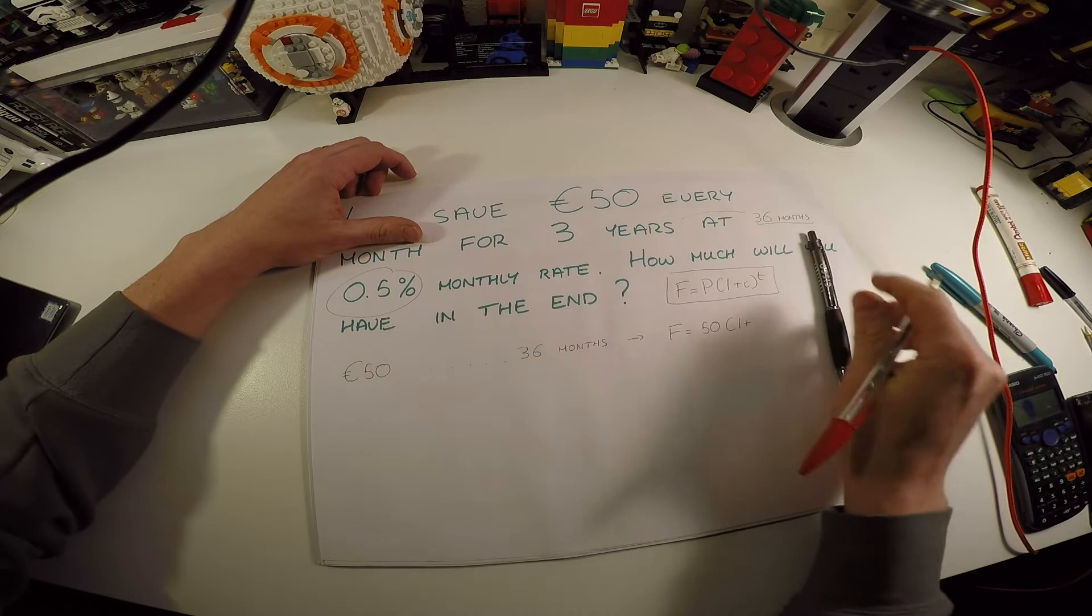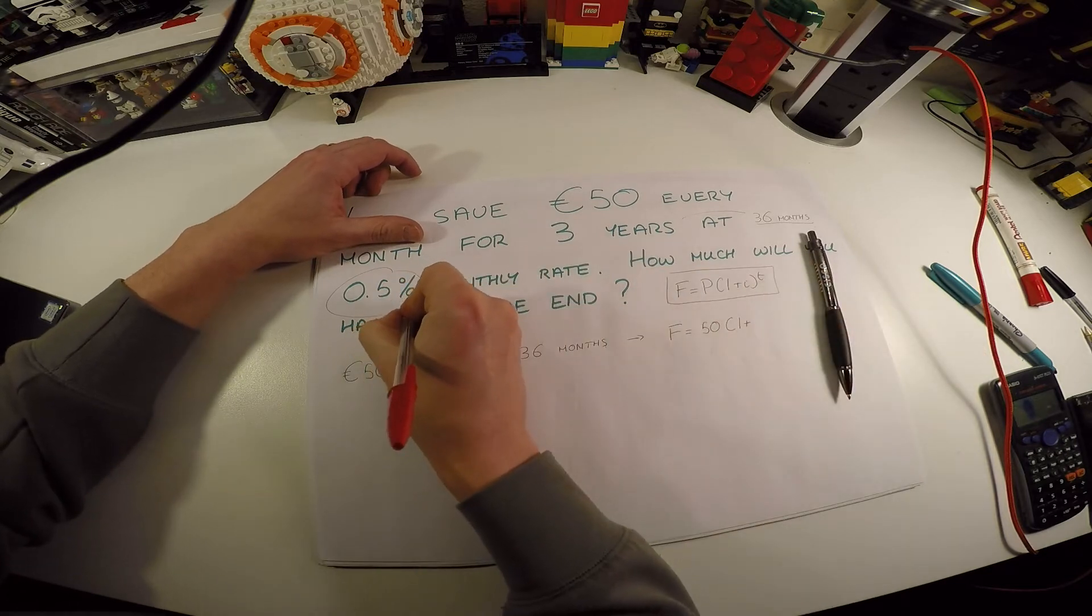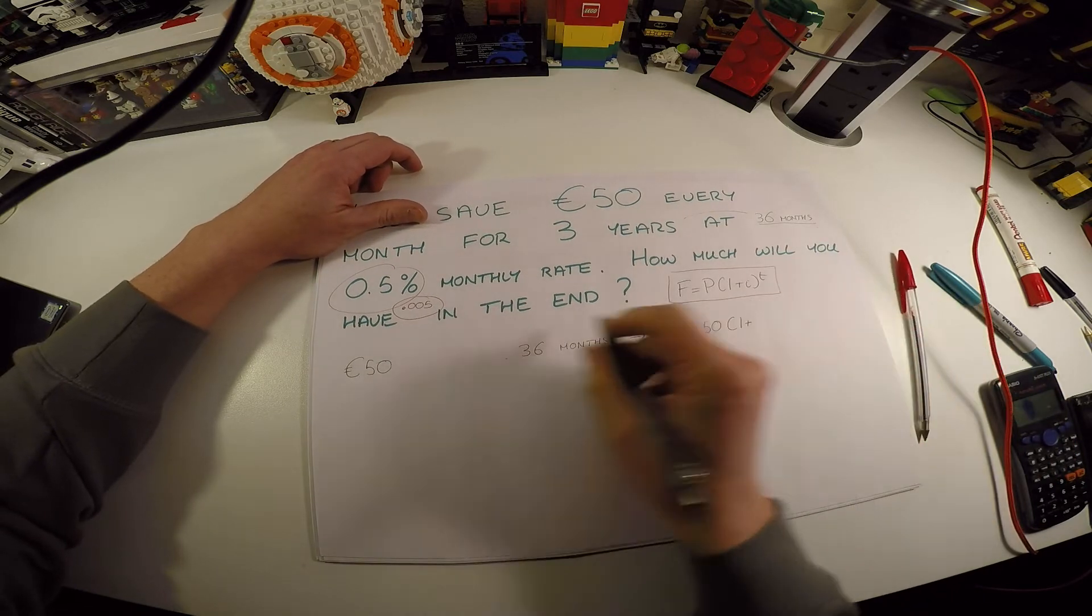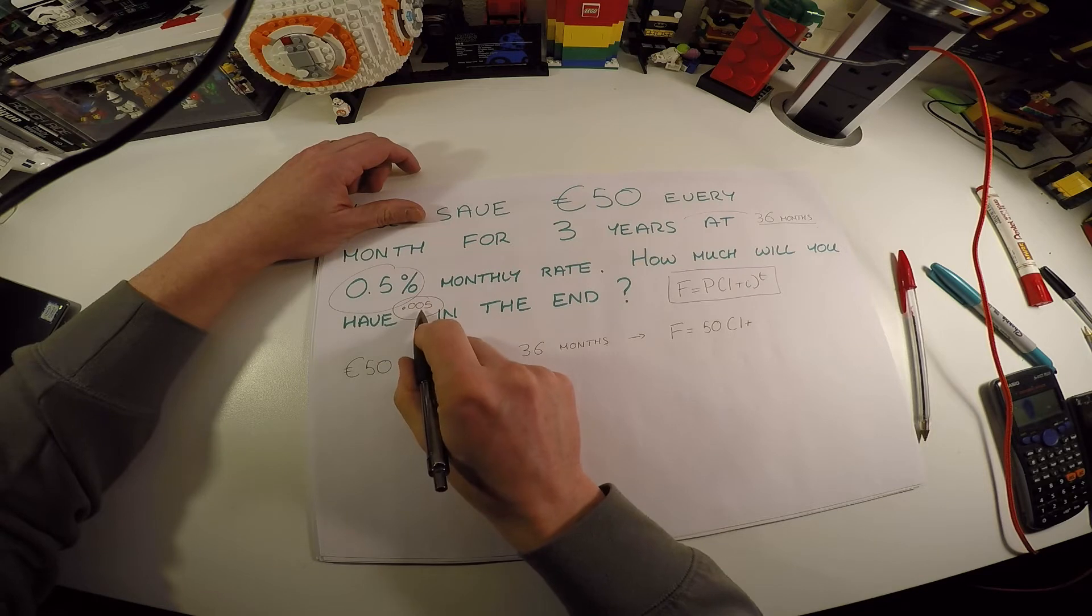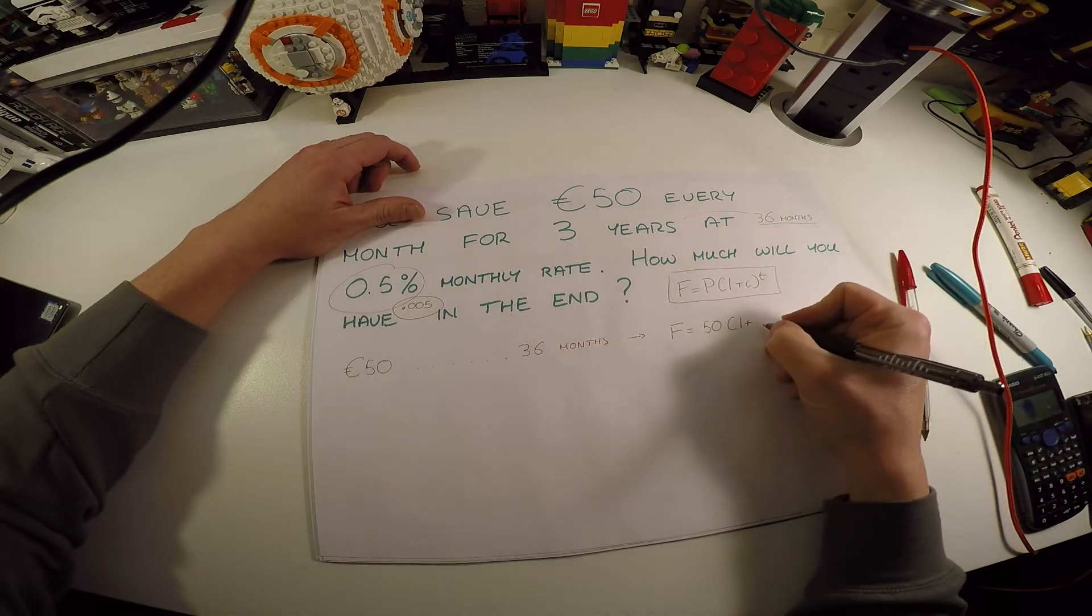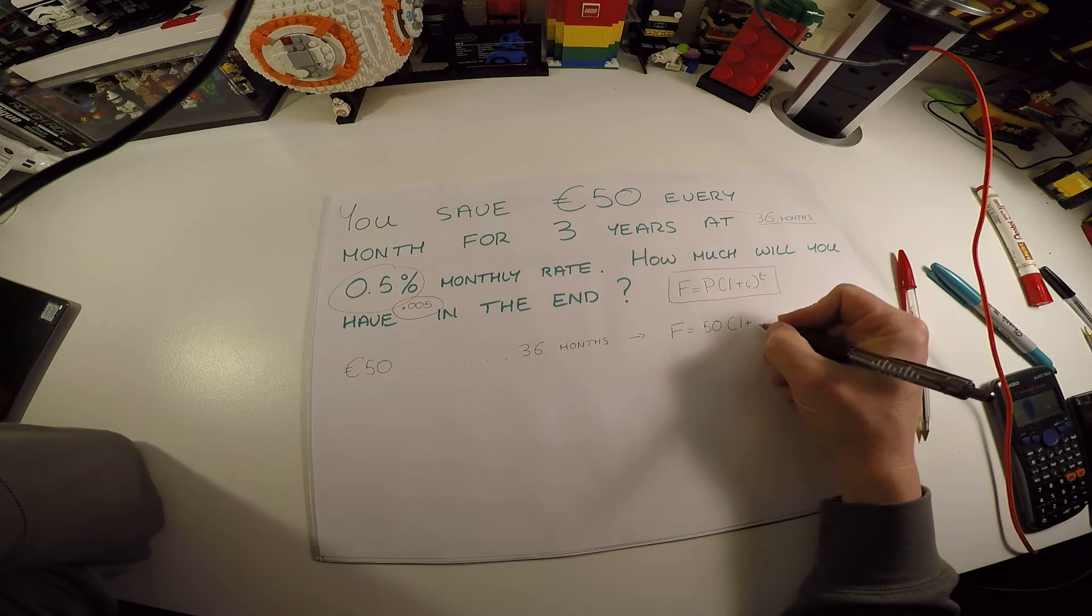Now be careful here: a 0.5% interest rate equates to 0.005 in decimal. You need to be super careful you don't put in 0.5 here. 0.5% is 0.005, divided by 100 if you like. So we put 0.005 in here.